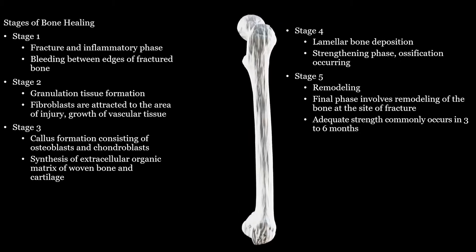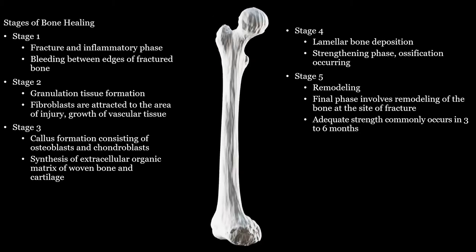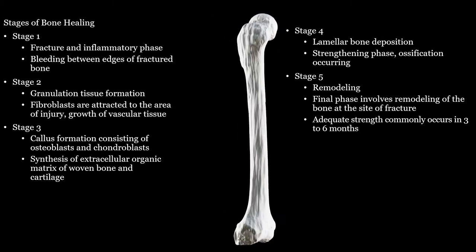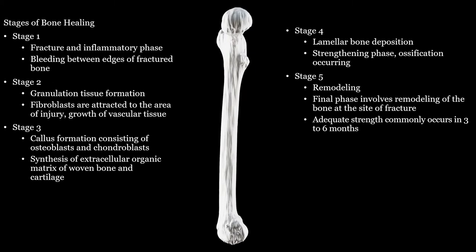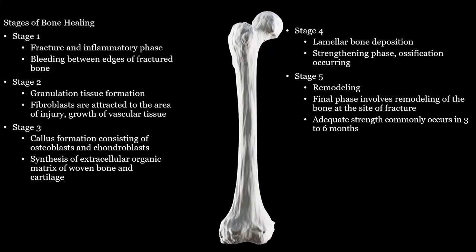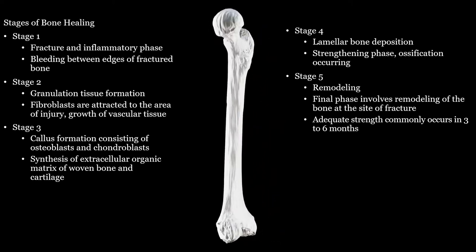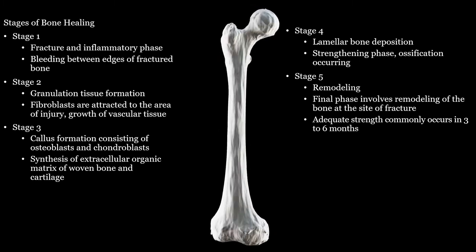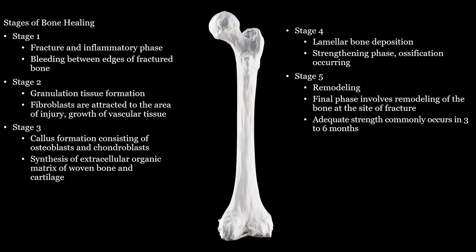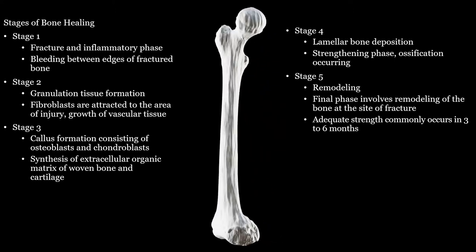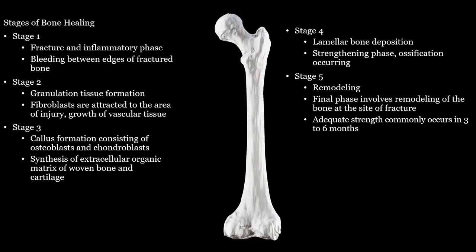Following a fracture, bones must begin the process of healing. There are five distinct stages. Stage 1 is the inflammatory stage with bleeding between the edges of fractured bone. Stage 2 is the granulation stage where granulation tissue forms, fibroblasts come to the area and produce fibrin, and vascular tissue regenerates. Stage 3 is callus formation with osteoblasts and chondroblasts rebuilding bone and cartilage, and the extracellular matrix begins to regenerate. Stage 4 is the elementary deposition stage with strengthening of the bone by ossification. Stage 5 is remodeling and the final stage, where the bone reaches full strength in three to six months.